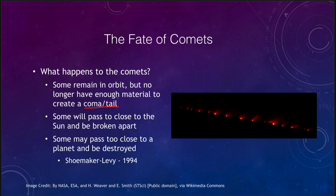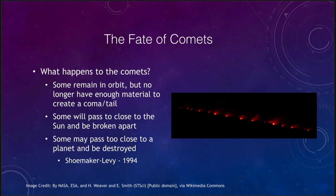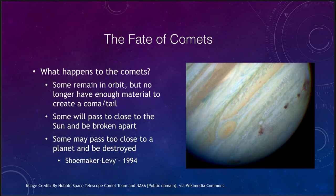Some comets can actually be broken apart if they come too close to the sun or one of the planets. We see here one that passed close to Jupiter and was actually ripped into a number of pieces by Jupiter's tidal forces. Some can be destroyed by the sun, some can be destroyed by a planet, or can actually impact into a planet. Comet Shoemaker-Levy in 1994 actually crashed into Jupiter and we saw all the pieces of it, and the scarred remnants of where it struck Jupiter.